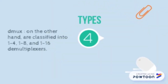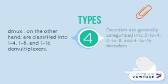Fourth, types of decoder and demultiplexer: decoders are generally categorized into 2-to-4 decoders, 3-to-8 decoders, and 4-to-16 decoders. Demultiplexers, on the other hand, are classified into 1-to-4 demultiplexers, 1-to-8 demultiplexers, and 1-to-16 demultiplexers.